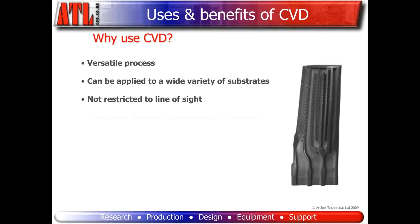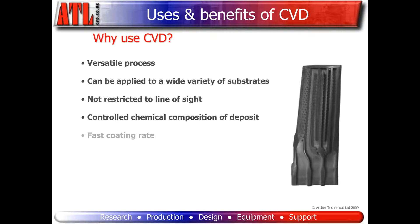Control of chemical composition of the deposit enables graded and mixed coatings to be produced. It has a fast coating rate — thick coatings and net shapes are possible. The CVD process can have a high deposition rate, allowing thicker coatings than some other methods.